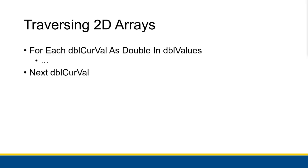You can also use a For Each loop. For each value as a double in doubleValues, do whatever inside the loop. That actually goes through in row-then-column order: row 0 column 0, row 0 column 1, row 0 column 2, et cetera, until it finishes that row. Then it goes to row 1 column 0, row 1 column 1, row 1 column 2, et cetera, all the way through every single cell.